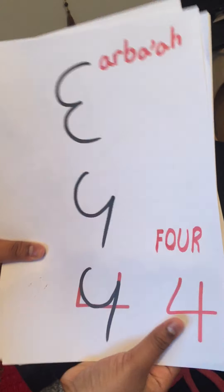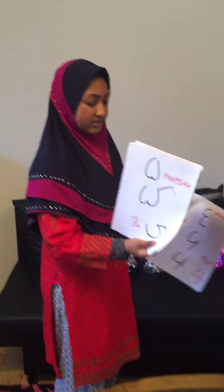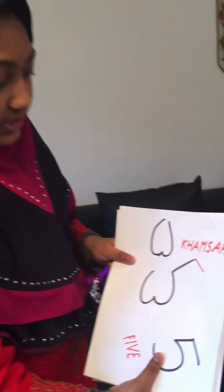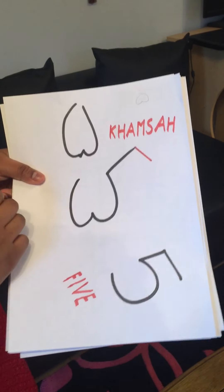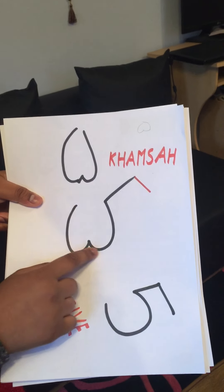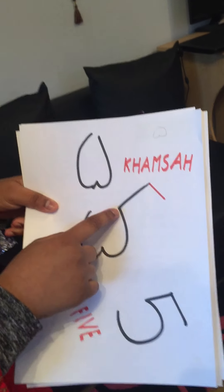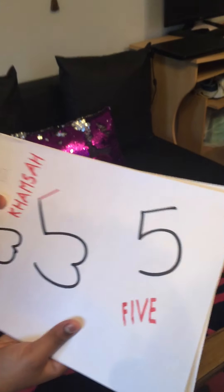Number five in Arabic looks like this. Some people write it with a closed top. Originally it was written with a small dash, then they added a line, turned it around, took away the bump, and it became the five we have now.